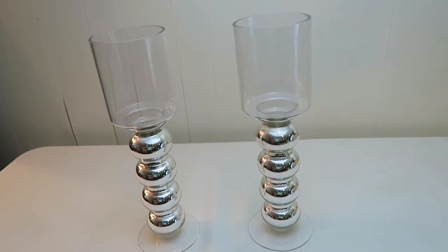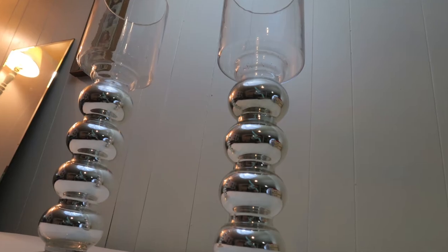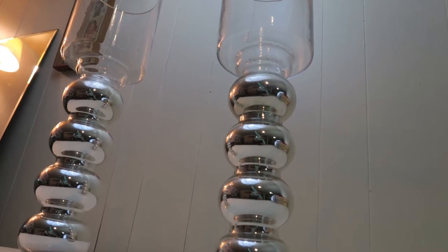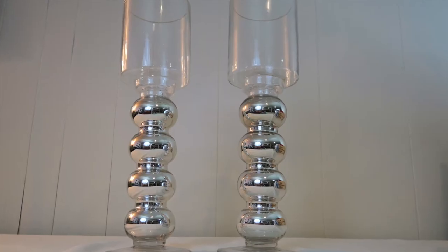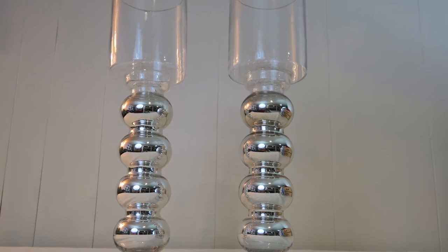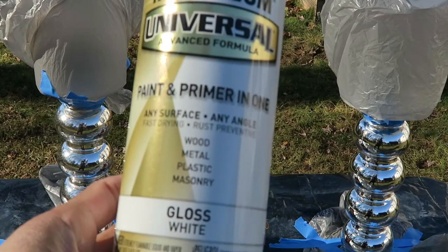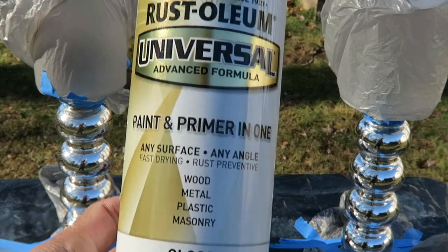Hey everyone, thanks for tuning in to Random Bites of a Sweet Life. Today on Makeover Monday, I'm going to share how I transform these vases and use them as Christmas decor. I got my Rust-Oleum paint and primer in gloss white and spray-painted all the silver parts of the vases.